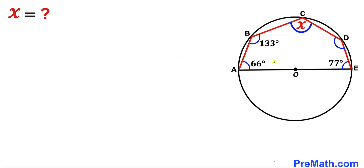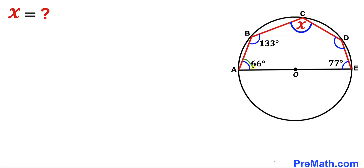Welcome to Pre-Math. In this video we have a circle with center O along with chords AB, BC, CD, and DE. AE is the diameter of this circle. Angle OAB is 66 degrees, angle ABC is 133 degrees, and angle OED is 77 degrees. Angle BCD is represented by angle x, and our task is to find the value of angle x.